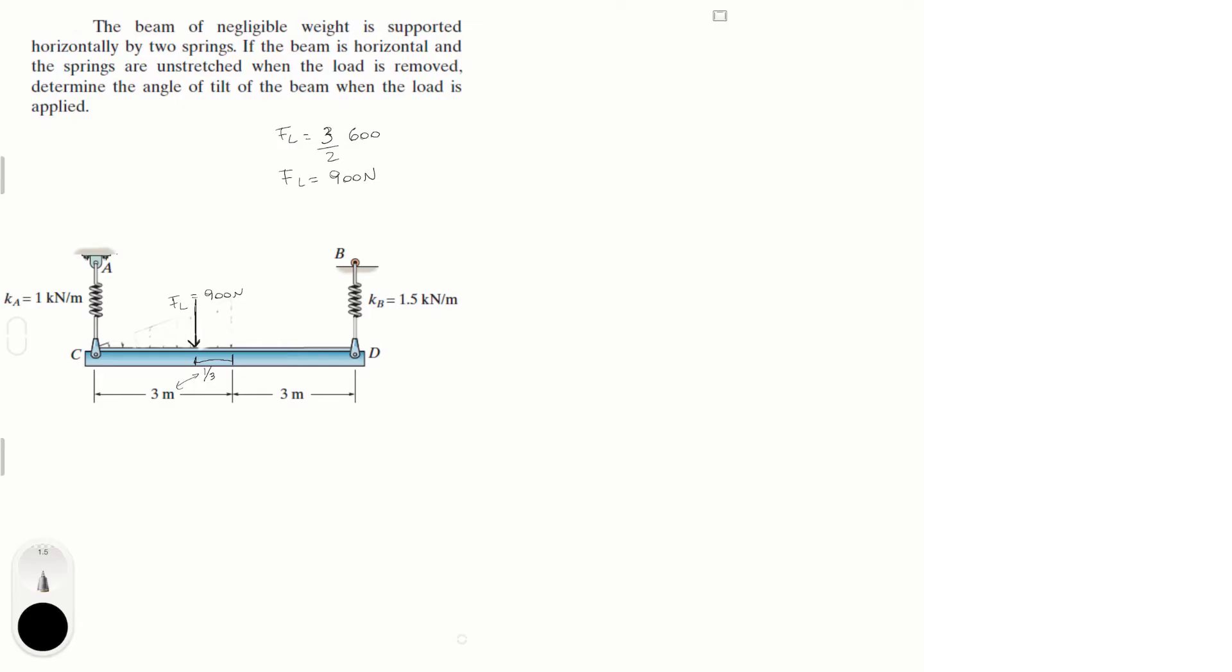we know that this is the state when it is unstretched. What they want is when the bar looks like this, awesome drawing skills here. You know the spring is going to be pulling up, the spring is going to be pulling up, and then the load F_L is going to be pulling down. So let's call this F_B and let's call this F_A. And they basically want to know this angle of tilt.